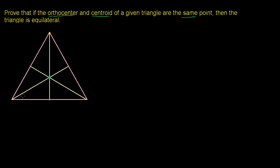If we assume that these lines are altitudes, then they are perpendicular to the opposite sides, giving us 90 degree angles at each intersection. And the fact that the point is a centroid means that each of these lines bisects the opposite side — so this length equals that length, this length equals that length, and this length equals that length. This means each line is also a perpendicular bisector, so this point is also the circumcenter of this triangle.